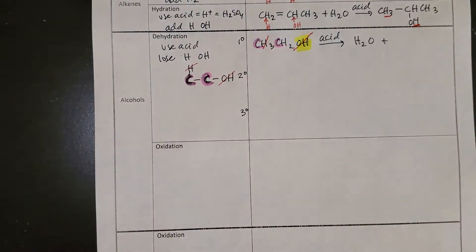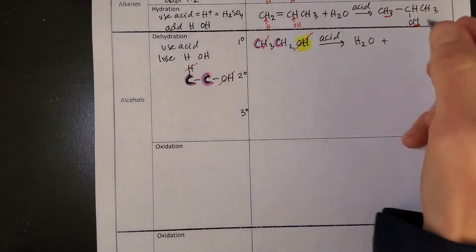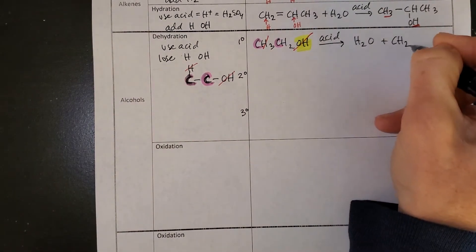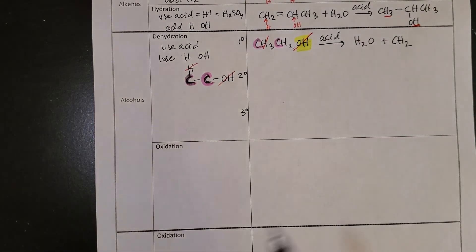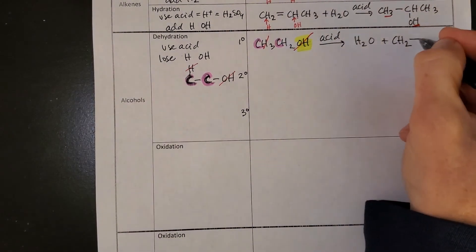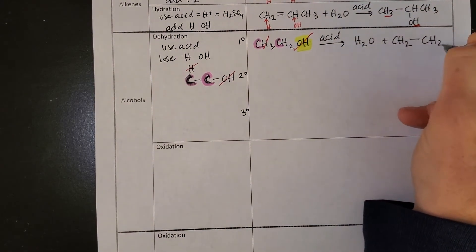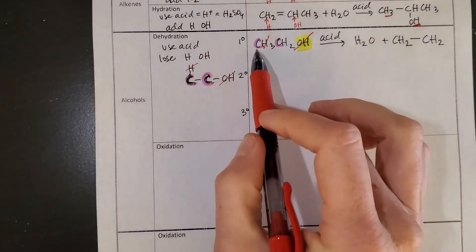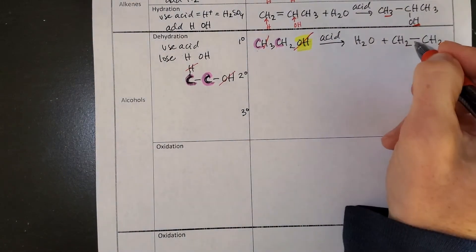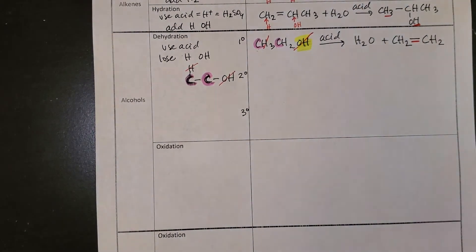We will lose an OH, we will lose an H. And so my product ends up being now CH2. And then we have the same single bond that was there before, a CH2. But I now, between these two carbons, am going to add a second bond. They both lost something, so they're able to form a new double bond.